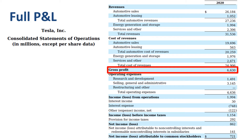If you analyze the profit and loss statement of a company, gross profit in many cases is an excellent place to start. If a company is able to grow revenue and grow gross profit at the same rate or faster than revenue, then income from operations might grow exponentially.